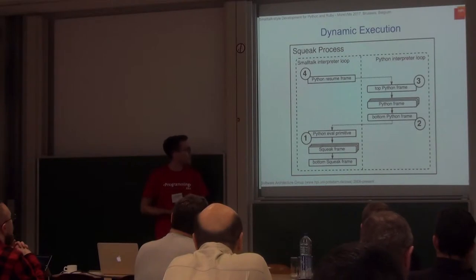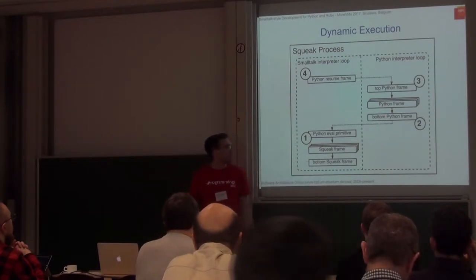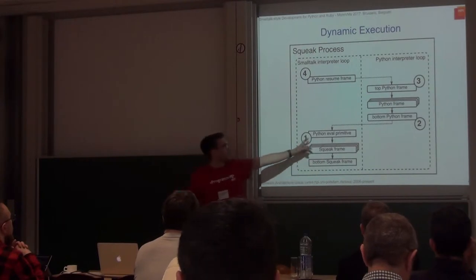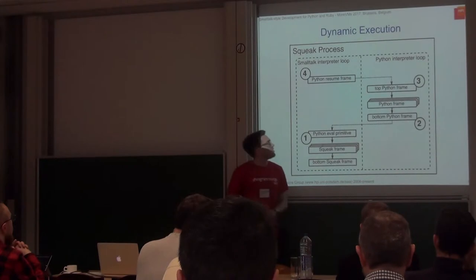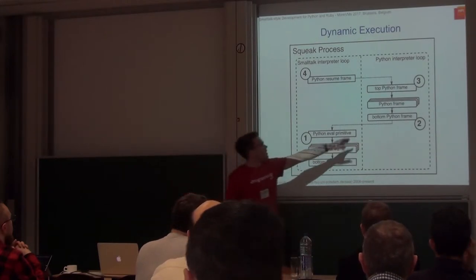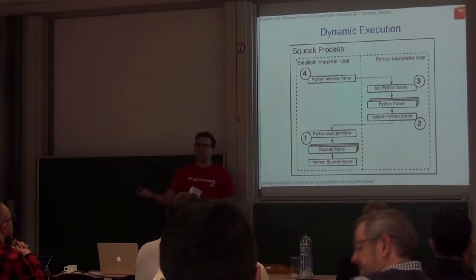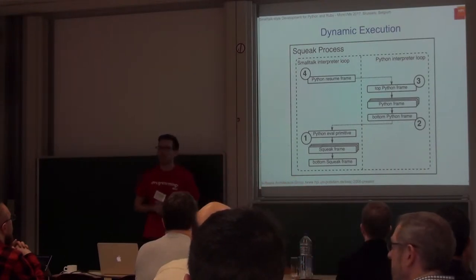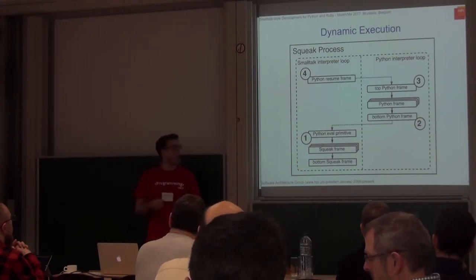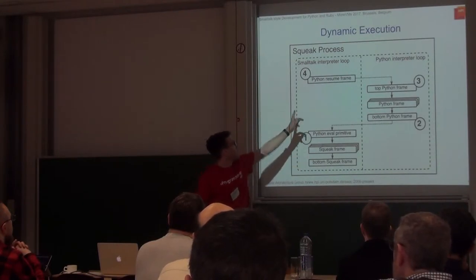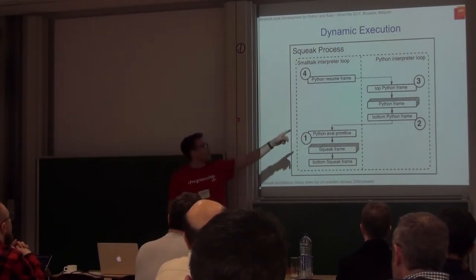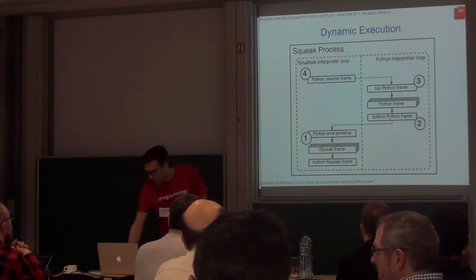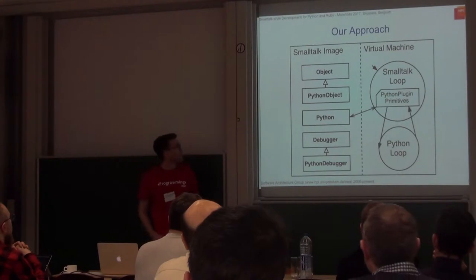Here's how the frames are structured: at the bottom you have Squeak — a Smalltalk dialect — frames, and then at some point the programmer evaluates Python, which triggers a switch to the Python interpreter loop. We have different Python frames, and when the process yields we put a fake Smalltalk frame on top. The next time the Smalltalk scheduler decides to continue with Python, it uses that resume frame and then Python execution starts again. That's basically how the scheduling part is done.